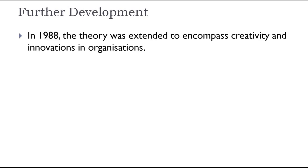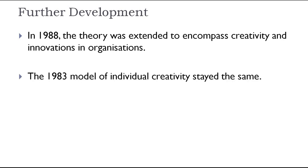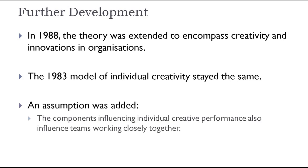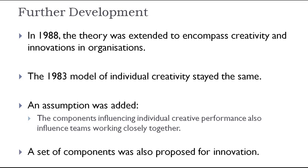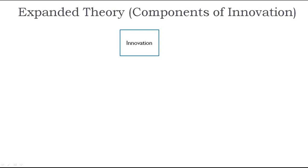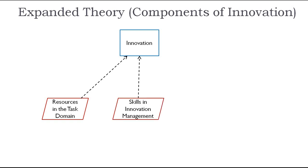Since the theory was made in 1983, further development has also occurred. In 1988, the theory was expanded to encompass creativity and innovation within organizations. The 1983 model of individual creativity stayed the same; however, an assumption was added that the components influencing individual creative performance also influenced teams working closely together. A parallel set of components was also proposed for innovation: resources in the task domain, analogous to domain-relevant skills; skills in innovation management, analogous to creativity-relevant processes; and motivation to innovate, analogous to an individual's task motivation. These three components constitute the working environment which impacts individuals and teams when they are trying to innovate.